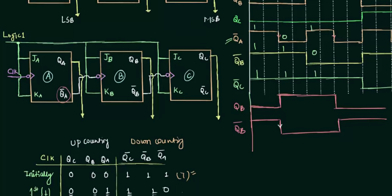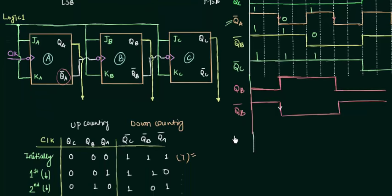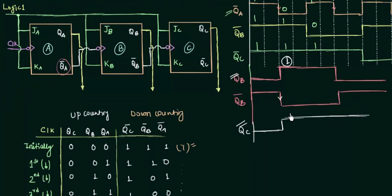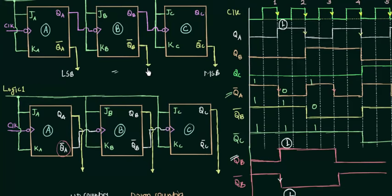Using the falling edges of QB complement, we plot QC: QC is initially low and goes high at the first falling edge of QB complement. For the first clock pulse we then have QA = 1, QB = 1, QC = 1, which is decimal 7. So both circuits produce down counting starting from 7.